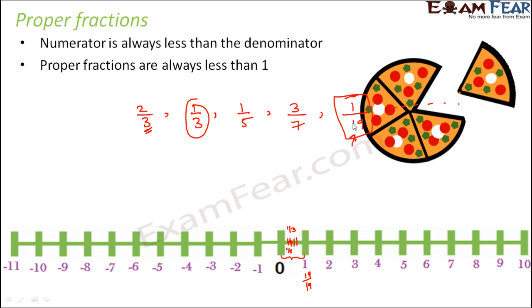So 1 by 19 is also an example like that. So in all the fractions where the numerator is lesser than the denominator, the overall value of the fraction is always less than 1. I hope that this logic is getting clear to you.